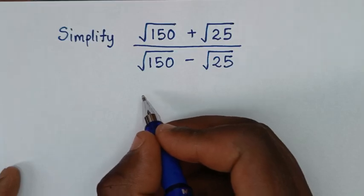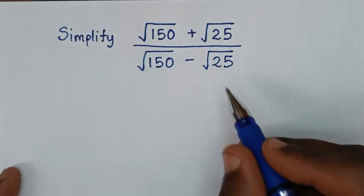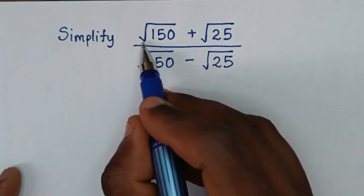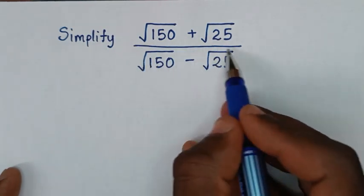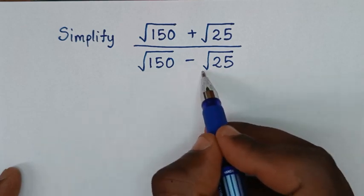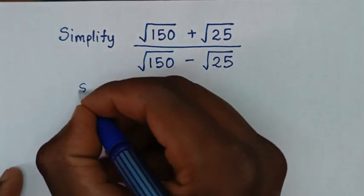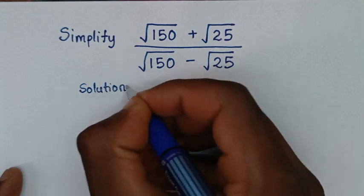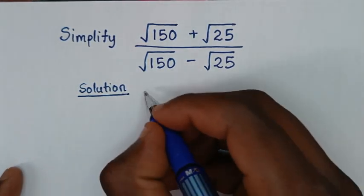Hello, you are welcome to solve this math problem: simplify square root of 150 plus square root of 25, over square root of 150 minus square root of 25. Now, solution. To solve this problem, we have two methods.